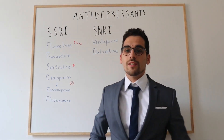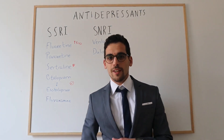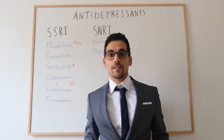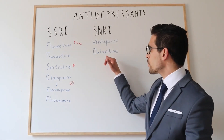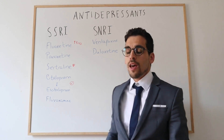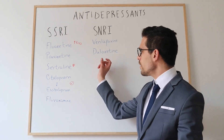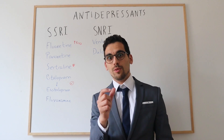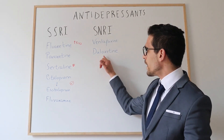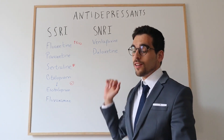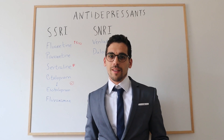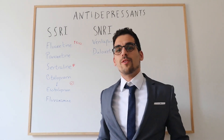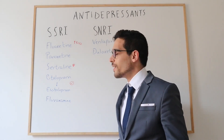The second SNRI is duloxetine. In addition to its indication for depression, duloxetine can also be used for pain. You can associate 'dul' with pain as a memory aid. It is indicated for neuropathic pain and can also be used for stress urinary incontinence.